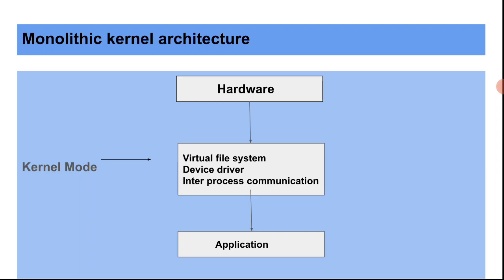In microkernel, virtual memory, memory management, and process management each create their own individual connection with the application. In contrast, in the monolithic kernel everything creates a single connection rather than individual ones, and everything is handled within kernel mode. That is the simple representation of the monolithic kernel architecture.